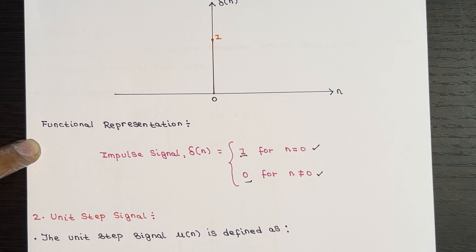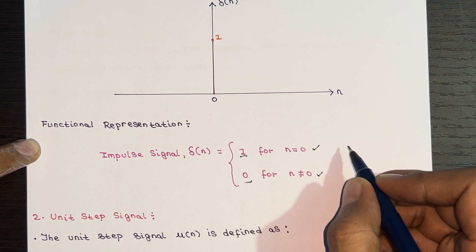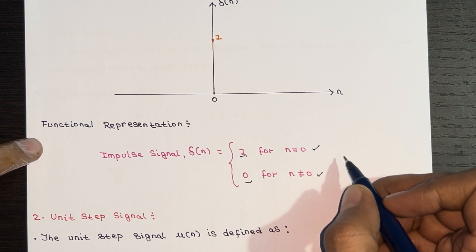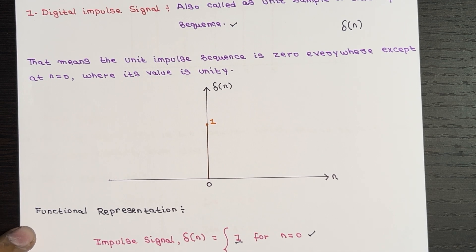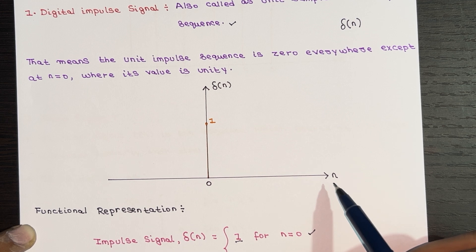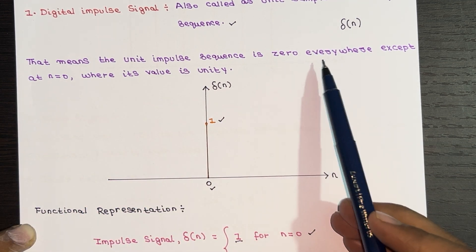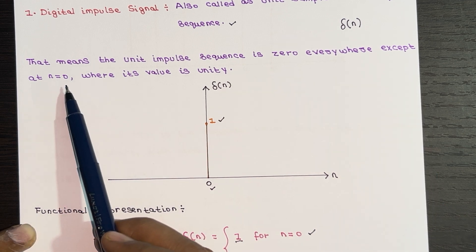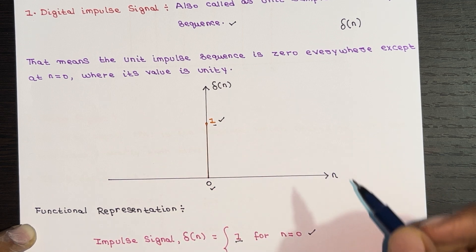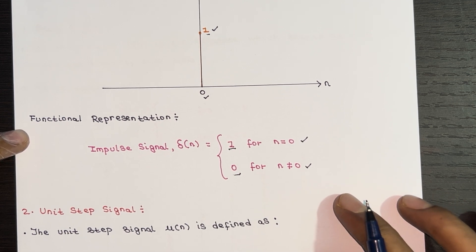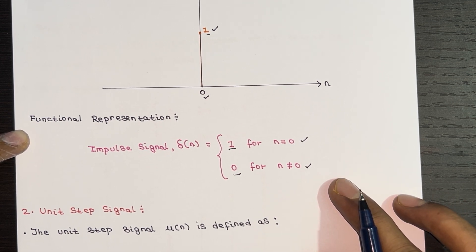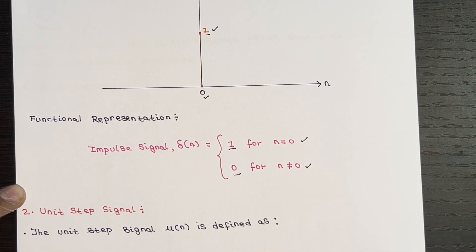This signal is super important when it comes to analyzing signals and systems — it's like the building block we use to understand how things work. For the graphical representation, we plot δ(n) versus n. At n equal to zero, the value of δ(n) is one, and the unit impulse sequence is zero everywhere except at n equal to zero, where its value is unity. I hope this graphical and functional representation is clear.